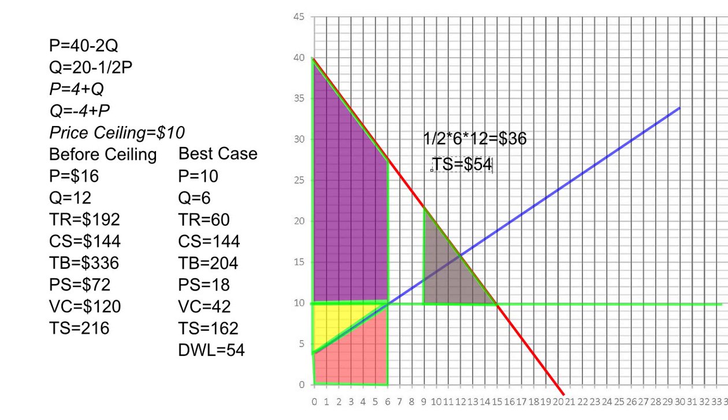If we compare the total surplus without any price ceiling or price floor—$216—to the $54, our deadweight loss now could be as high as $162. So the deadweight loss would equal $162 in the worst case scenario, and the $54 deadweight loss is the best case scenario.